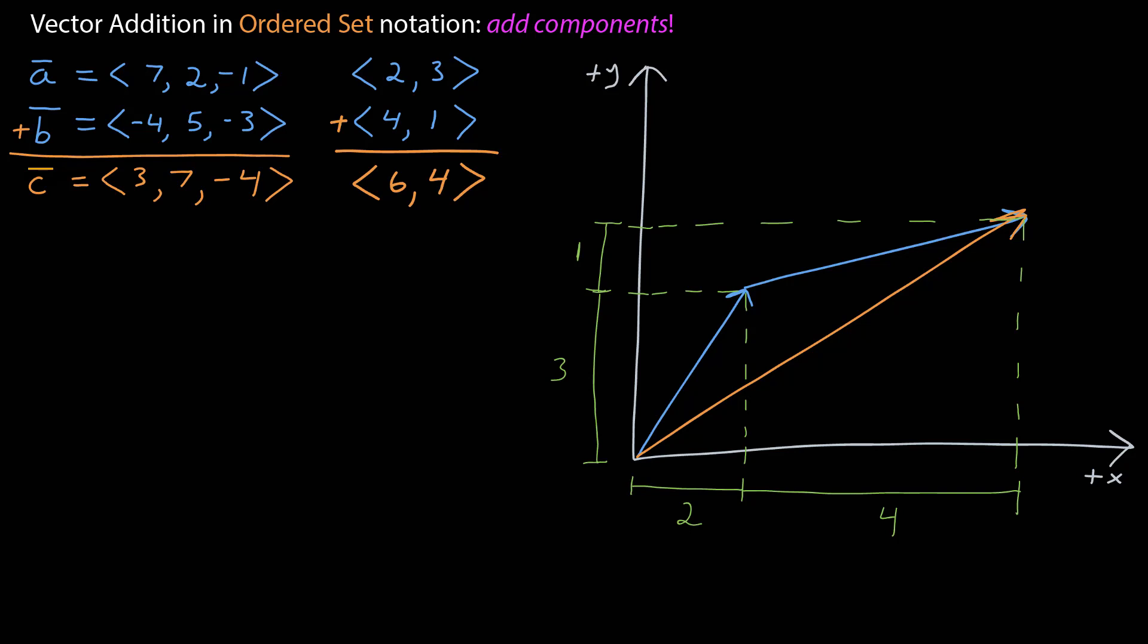Well, when you do that, you can see from the graph that the resulting vector covers six units along the x-axis and four units along the y-axis. So adding the components in the ordered set notation is exactly like adding the vectors graphically.